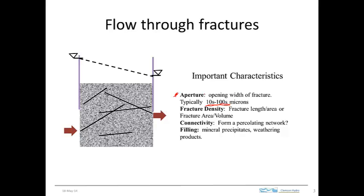One millimeter is equal to a thousand microns, so fractures of tenths of a millimeter are fairly typical for fairly conductive fractures. Just for reference, a piece of paper is about 75 microns thick.